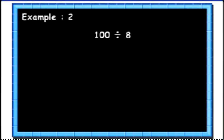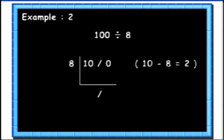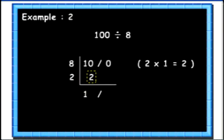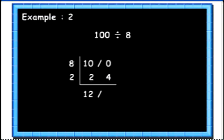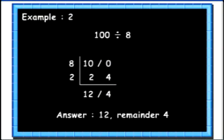Let's see another example. Here we will divide 100 by 8. Again we write the numbers in the same form. 10's complement of 8 is 2. We bring down the first digit 1 and multiply it with the complement to get 2. We write this 2 below the second digit 0. 0 plus 2 equals 2 — the next quotient digit. Then we multiply this 2 with the complement 2 to get 4. We place this 4 below the last 0. Finally, 0 plus 4 is 4. So we get the quotient as 12 and remainder as 4.